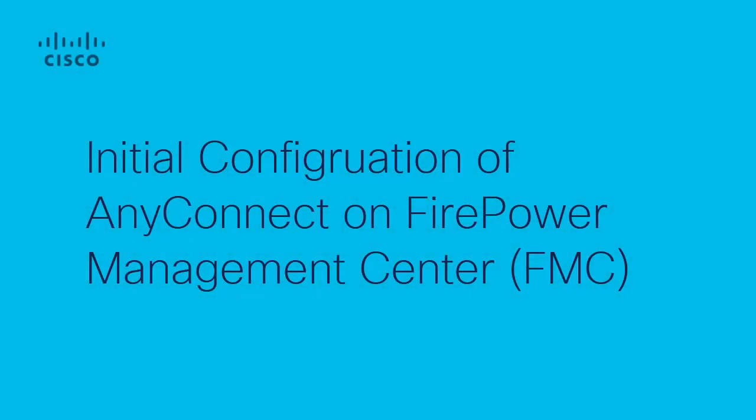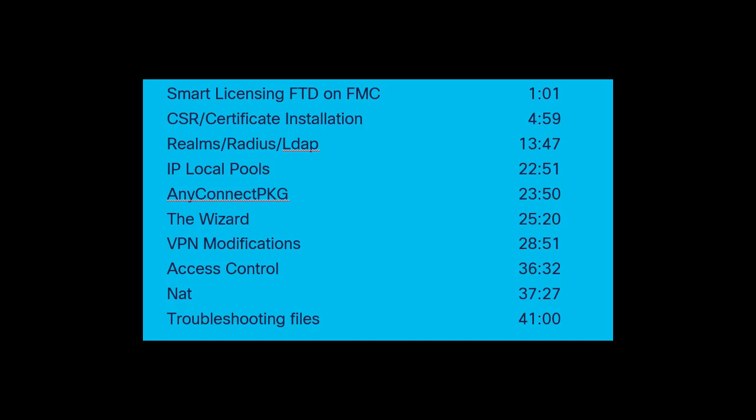Hello, this is Jason from Cisco VPN TAC team, and in this video we are going to configure the AnyConnect initial configuration for FTD, Firepower Threat Defense, managed by FMC, the Firepower Management Center. Before we get into the specifics of the configuration, it's assumed that you already have the FTD device being managed by FMC, and that all of the other initial configurations and interfaces are already set up.